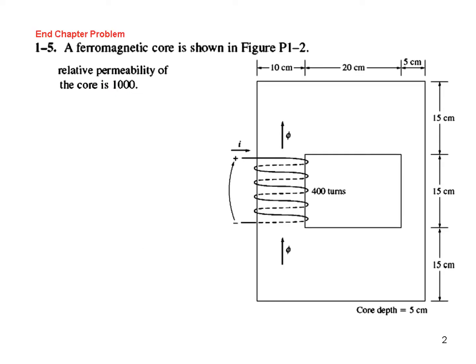So let's see the End Chapter Problem 1.5. A ferromagnetic core is shown in the figure. So this is the core.